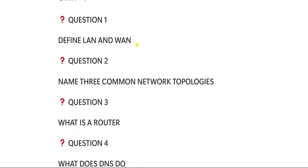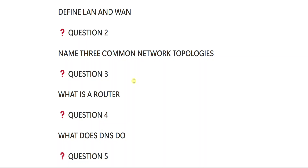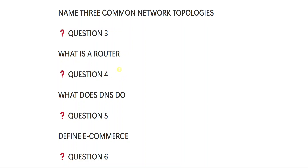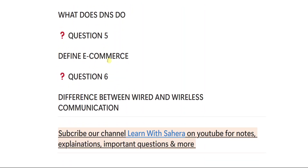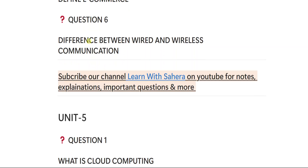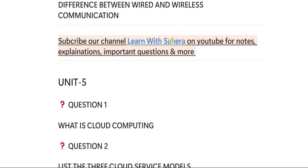From unit number four: one — define LAN and WAN, very important; two — name three common network topologies (you can write a small definition and describe the different topologies); three — what is a router; four — what does DNS do; five — define e-commerce; six — difference between wired and wireless communication. If you are perfect with long important questions, you are already 70 percent prepared for short questions.